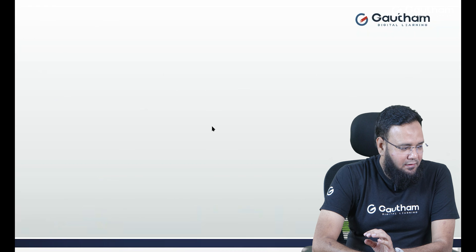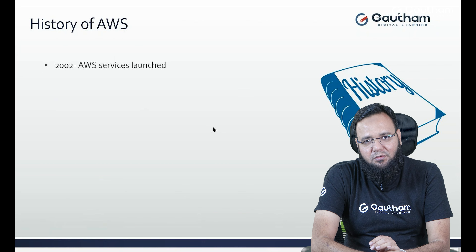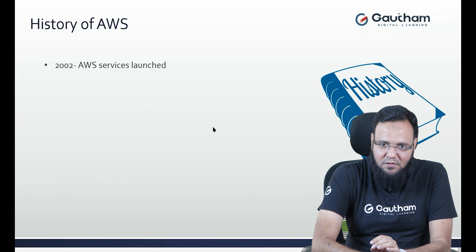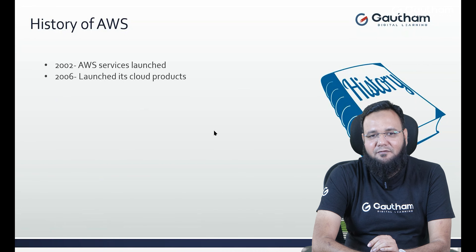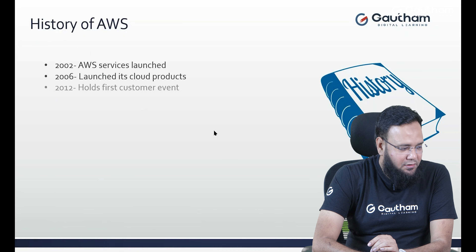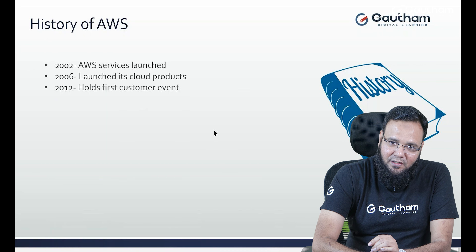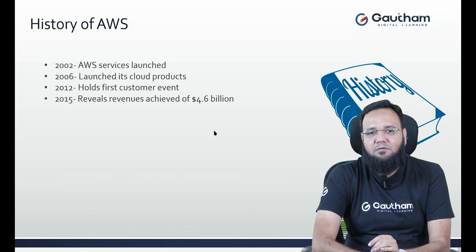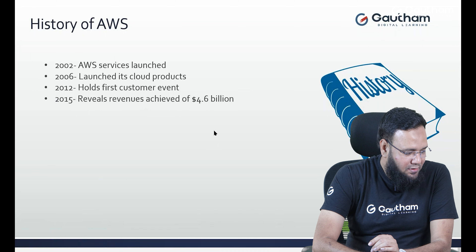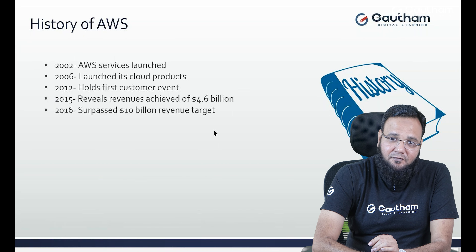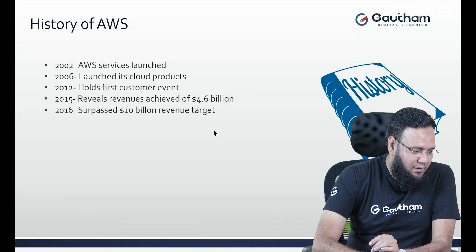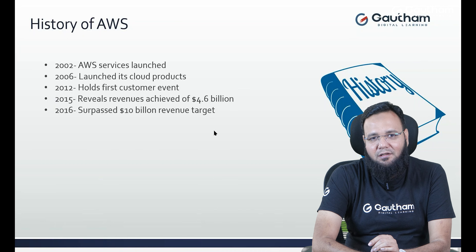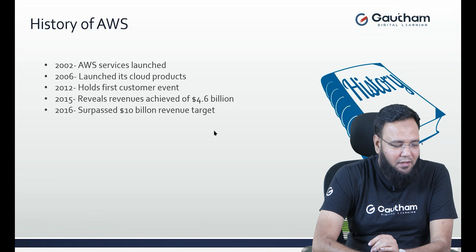AWS introduced the first cloud in history. In the year 2002, AWS launched its services but did not make it public. In 2006, they launched their first cloud product. In 2012, they held their first event declaring revenue of around $4.6 billion. In 2016, they surpassed the target of $10 billion. By 2023, they are nearly a $25 billion company, one of the biggest cloud companies in the market.